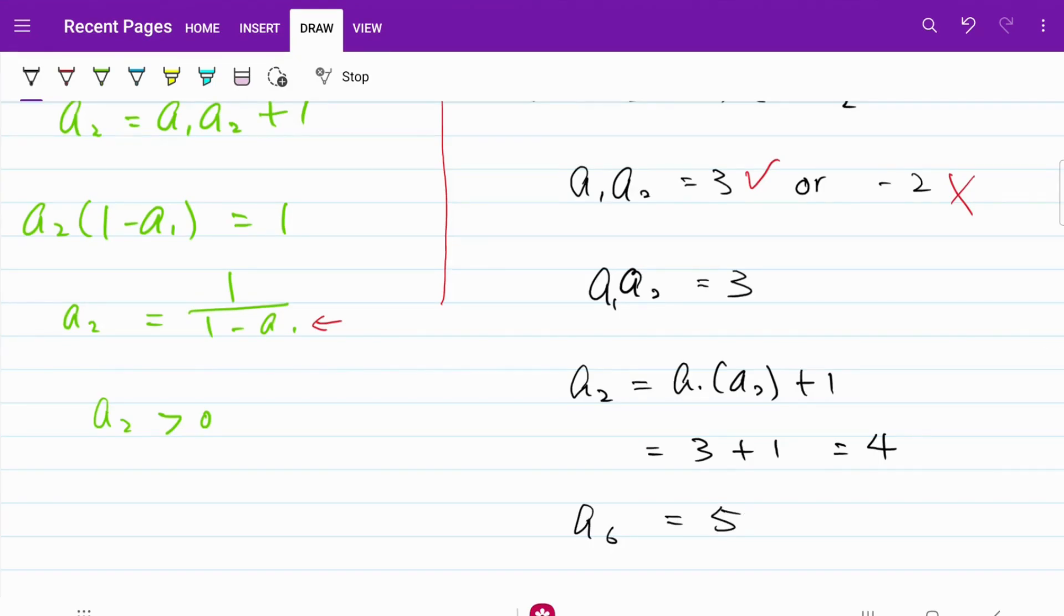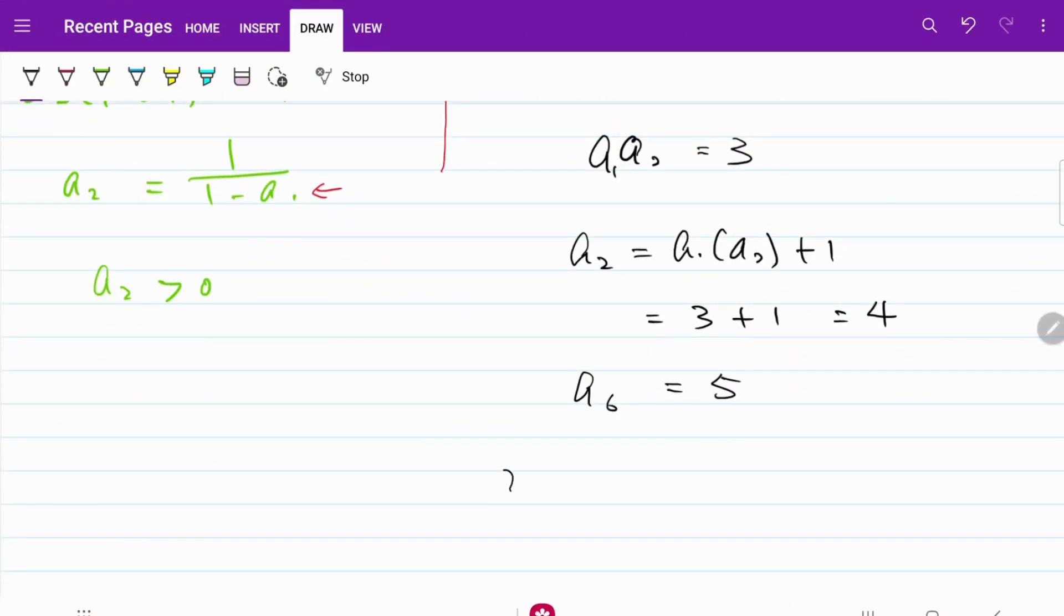From here, let's continue to work backwards. I have A12 to be equal to A2 multiplied by A6 + 1, which is equal to 4 times 5 + 1, which is equal to 21.